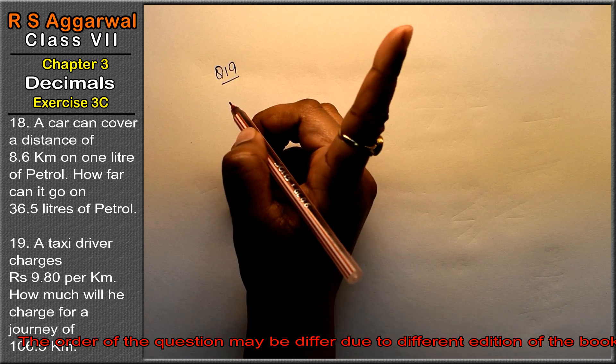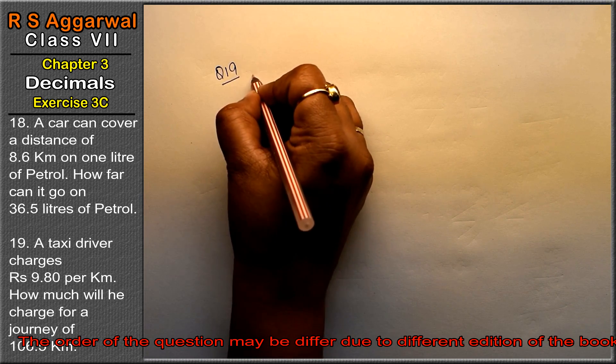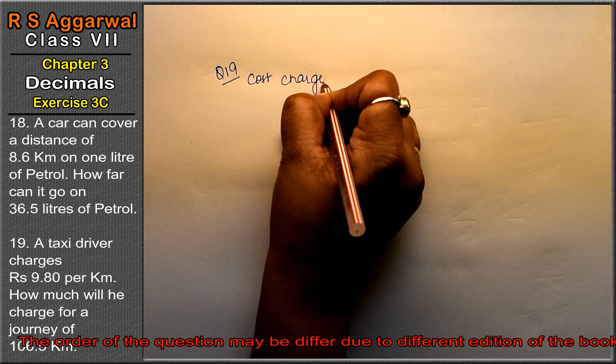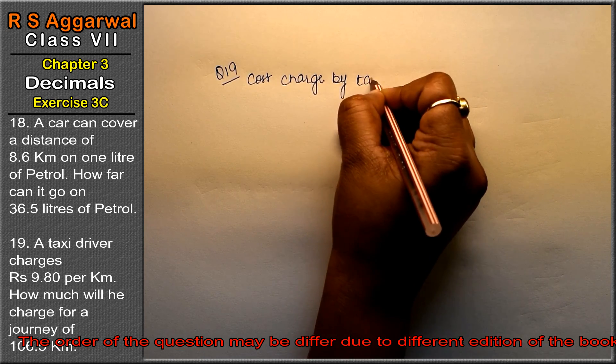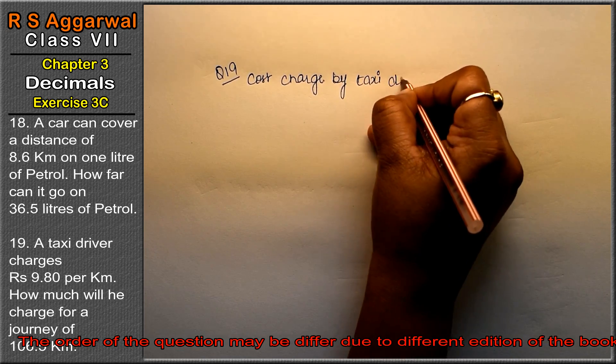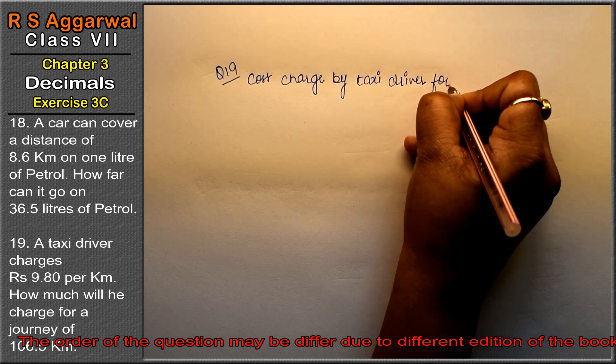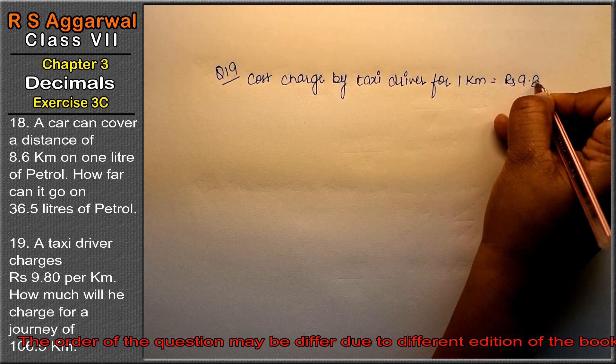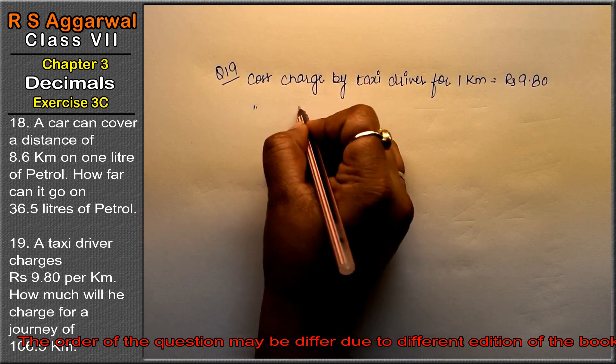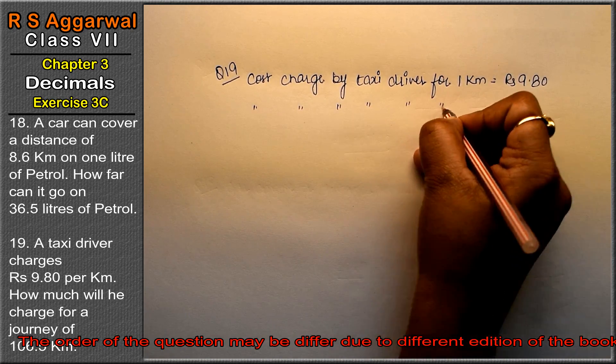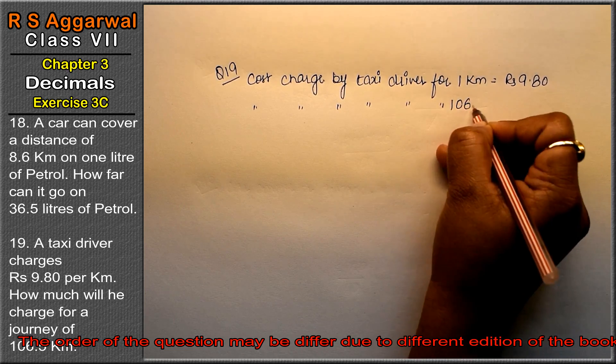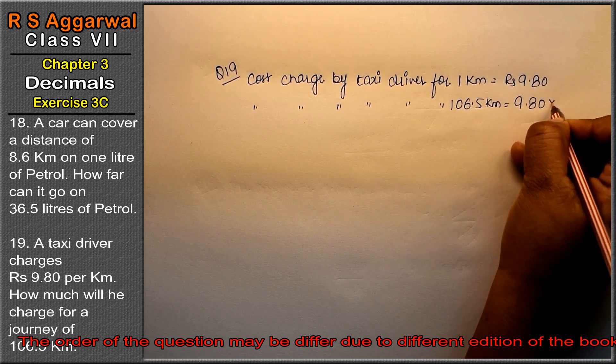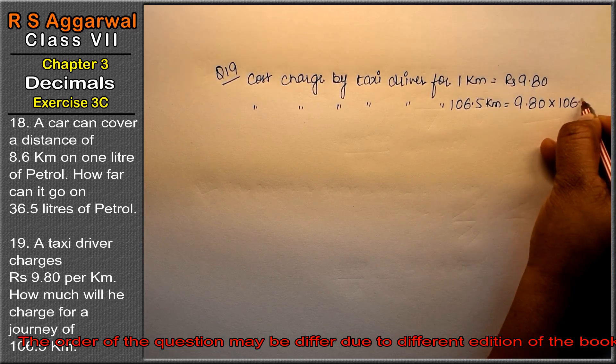Friends, cost charged by taxi driver for 1 km is given. Cost charged by taxi driver for 106.5 km - what is the charge? One is given, more we need to find. So we will multiply. We are given here 9.80 into 106.5.